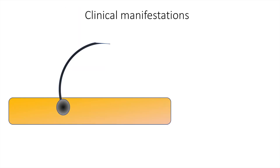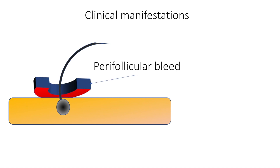This is a schematic diagram of a hair follicle. If there is hemorrhage around the hair follicle — that is, perifollicular bleed — then we must specifically think of vitamin C deficiency.